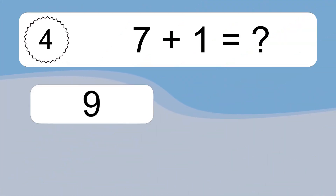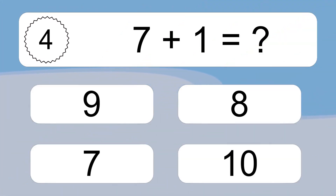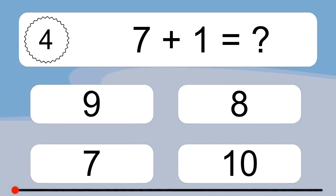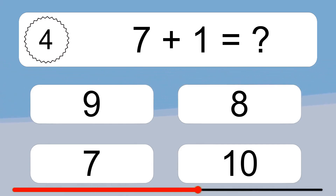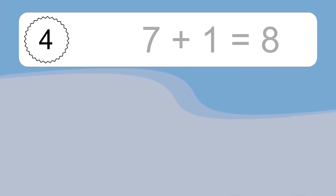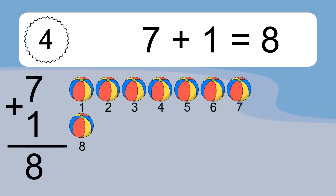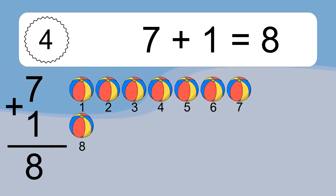7 plus 1 equals what? 7 plus 1 equals 8. Let's count it. 1, 2, 3, 4, 5, 6.